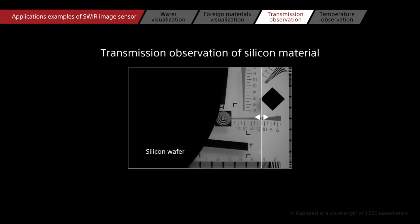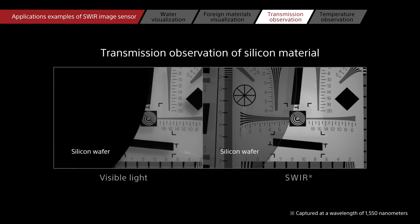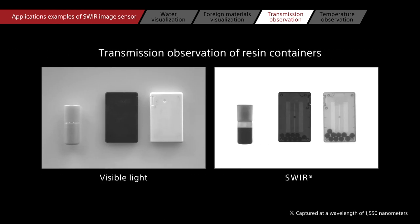Light in the SWIR band passes through silicon wafers used in semiconductor production and through some resin containers. As a result, SWIR imaging is also used in applications such as semiconductor production and filling inspections.